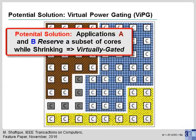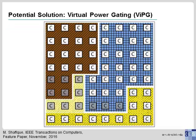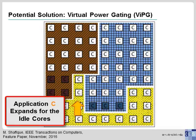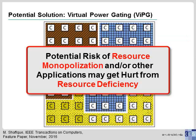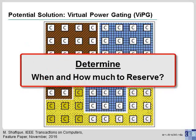A potential solution to this problem is that applications A and B reserve a subset of cores they may need in the near future — a concept we call virtual power gating. In this example, A and B have reserved cores marked in dark, and other applications can only expand to the available cores. As soon as A and B further require those cores, they can power them on. However, this leads to a resource monopolization problem that can limit scalability for other applications. The key challenge is determining when and how much to reserve, and how to avoid monopolization.